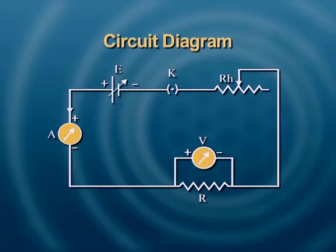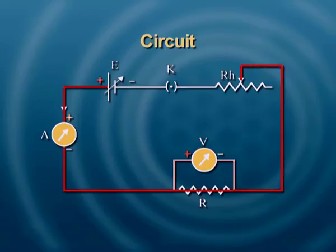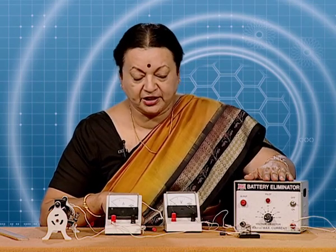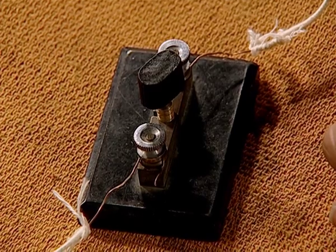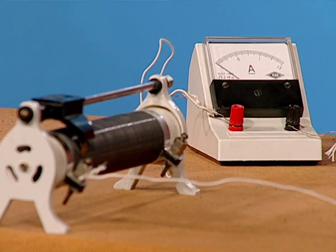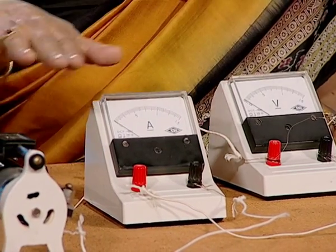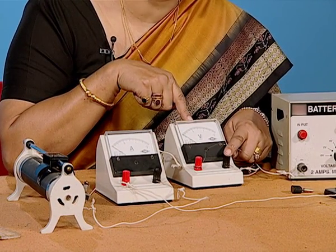The ammeter should always be placed in series and the voltmeter should always be placed in parallel with the conductor across which we want the potential difference. The battery eliminator provides the potential difference. The key is an on/off device controlling when current flows. The ammeter measures the current, and the rheostat is a variable resistance that allows us to change the current in the circuit. The current change will develop different potential differences across the wire, measured by the voltmeter.